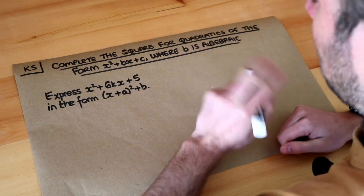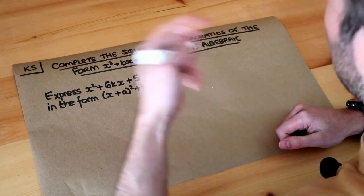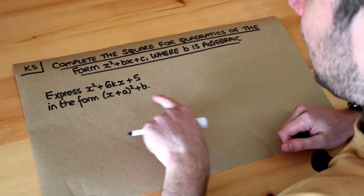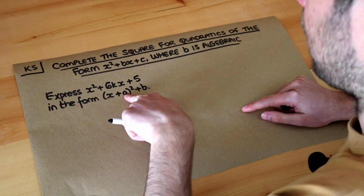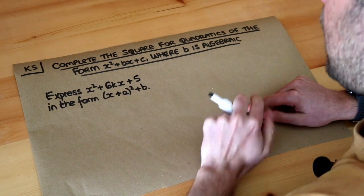Hopefully you've seen my previous videos on completing the square, and if you haven't, please watch those first. Completing the square means to take a quadratic and put it in the form (x + a)² + b, where a and b are constants.